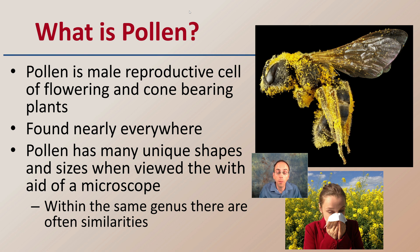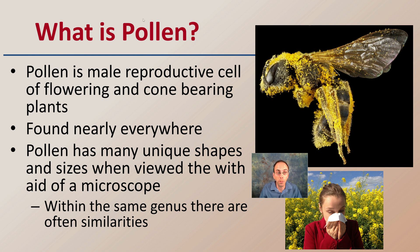Pollen has many unique shapes and sizes when viewed with the aid of a microscope. We may see it here as all this kind of little, tiny, yellow particulate, but under a microscope it can look vastly different. Within the same genus there are often similarities, but between different plant species there are definitely some noticeable differences.